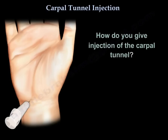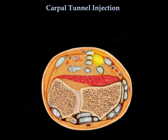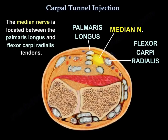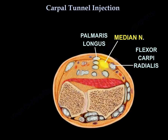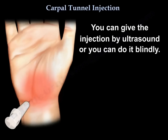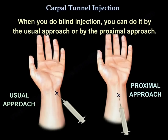How do you give an injection of the carpal tunnel? Here is a cross-section at the wrist area, and you can see that the median nerve is located between the two tendons — the palmaris longus and the flexor carpi radialis. You can give the injection by ultrasound, or you can do it blindly. When you do a blind injection, you can do it by the usual approach or by a proximal approach.